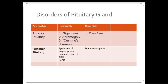Moving on to disorders of the pituitary: looking at the anterior pituitary, we have gigantism, acromegaly, and Cushing's syndrome. Cushing's syndrome is in brackets because it originates from the adrenal cortex, although the problem may originate from the pituitary. We also have hypoactivity causing dwarfism due to decreased production of growth hormone.